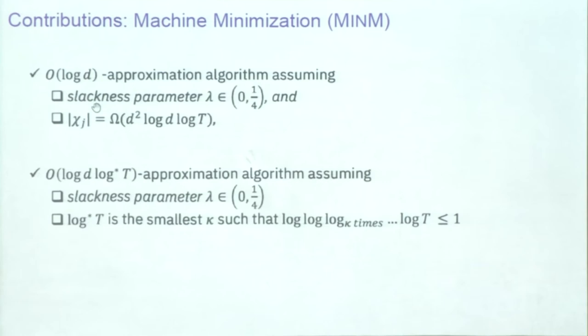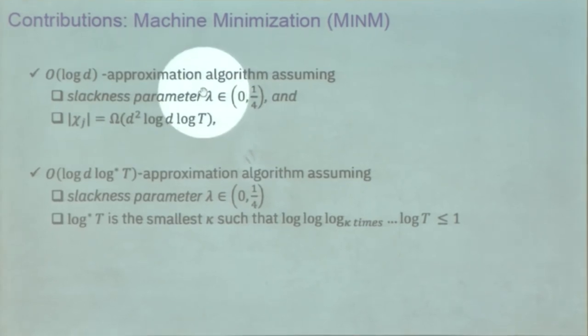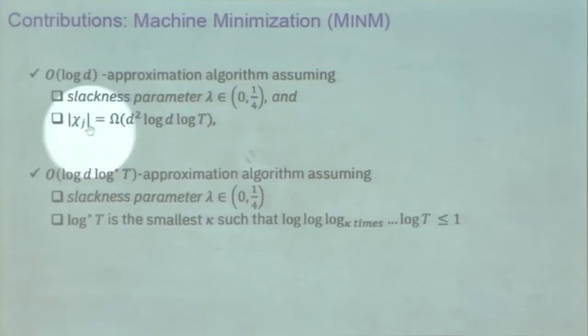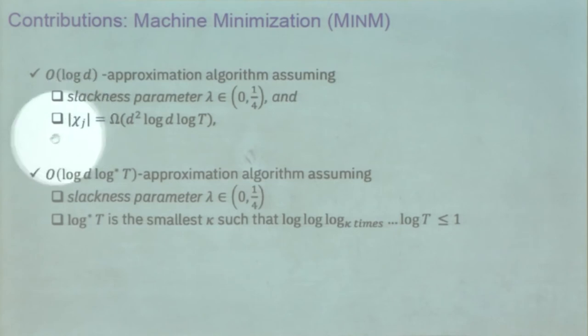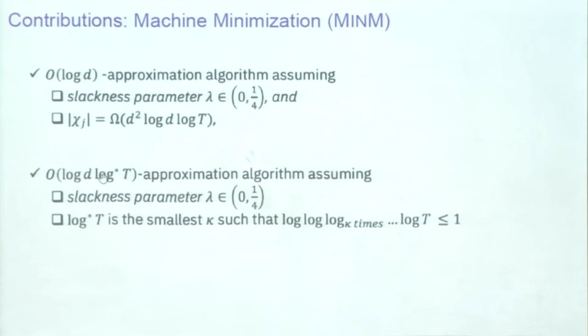For the machine minimization variant, there is a logarithmic approximation algorithm. There are two crucial assumptions: one on the slackness parameter and one on the interval. You can remove the assumption on the interval, but then you have a slight blow-up in the approximation. We won't be considering this variant further.